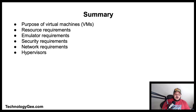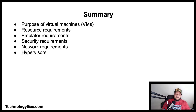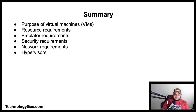In summary, we've talked about the purpose of virtual machines, resource requirements, emulators, security and network requirements, and the differences between a Type 1 and Type 2 hypervisor. If you got something valuable from this, go ahead and hit the like button, share, drop a comment, and hit the subscribe button. Also check out the website Technology G to get ready to successfully pass the CompTIA 220-1001 examination.